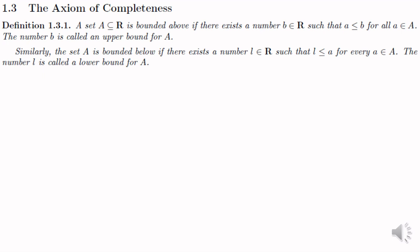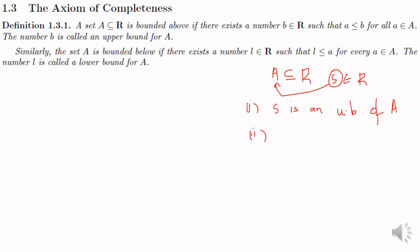Now we have another definition. Suppose A is a subset of R and S is any real number. We call S the least upper bound of the set A if it satisfies two conditions: first, S is an upper bound of A, and second, if B is any other upper bound of A, then S will be less than or equal to B. The least upper bound of A is also called the supremum of A, denoted as sup(A).